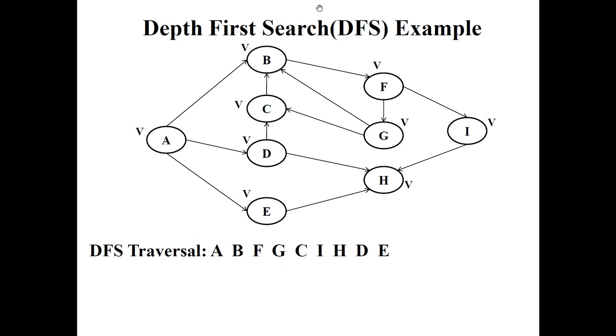A has one more unvisited neighbor, which is E. Then visit E. At this point, all nodes have been visited. So the final DFS traversal order is A B F G C I H D E.